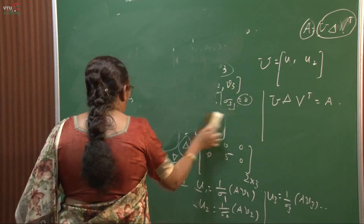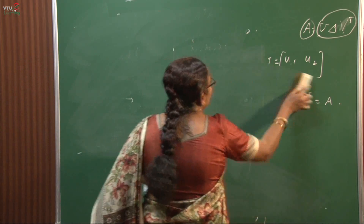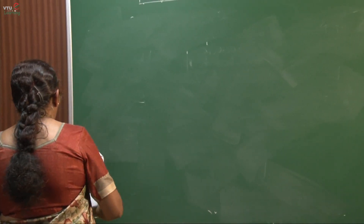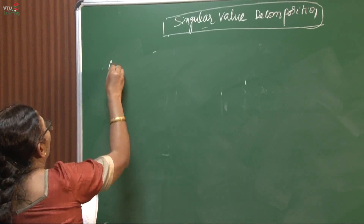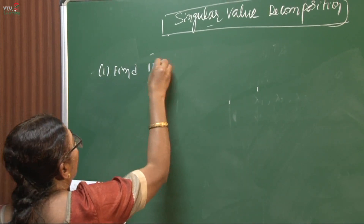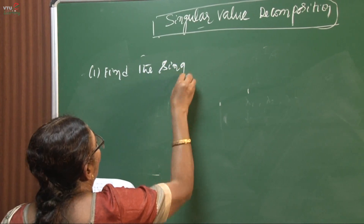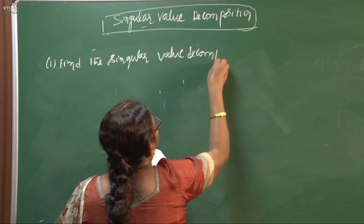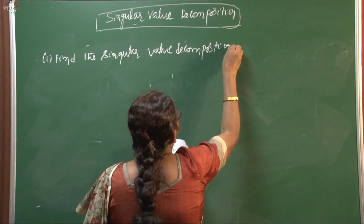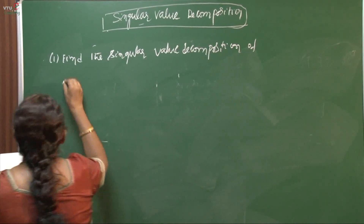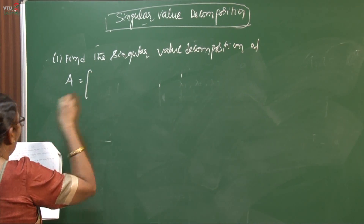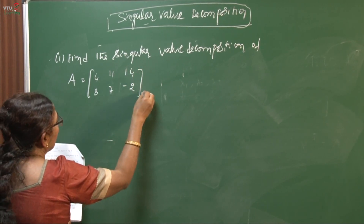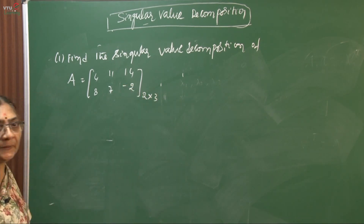Let us start Problem Number 1: Find the singular value decomposition of capital A, where A has columns [4, 8, 11, 7, 14, -2] — that is, a 2 cross 3 matrix with first row [4, 11, 14] and second row [8, 7, -2].